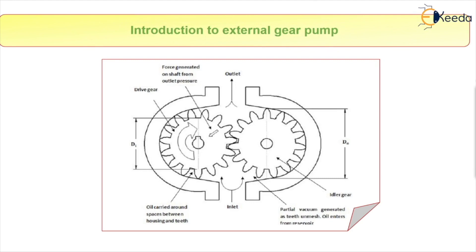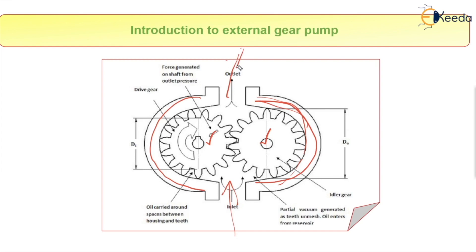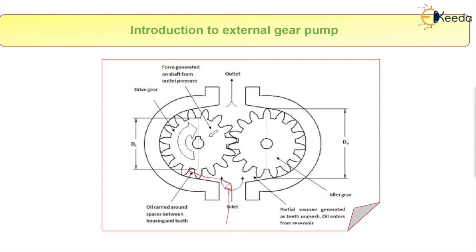Next, we discuss the external gear pump. For an external gear pump, we again need two gears — gear 1 and gear 2 — which are in contact externally, surrounded by a casing. We have an inlet on one side and an outlet on the other. The viscous fluid comes in at the inlet, moves through the spaces between the gear teeth along the casing, and is forced out at the outlet. Seals are provided so that the liquid moving toward the outlet does not go back and mix with the inlet. The direction of rotation can be reversed to change the inlet and outlet positions.